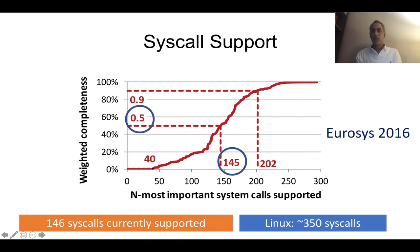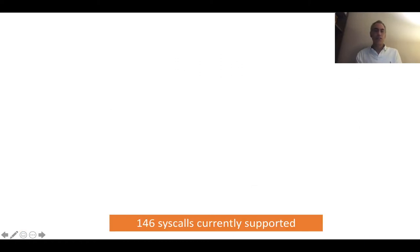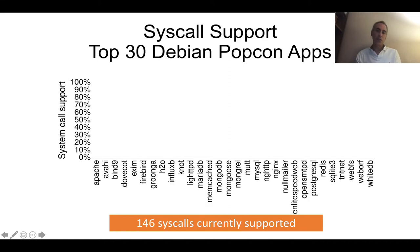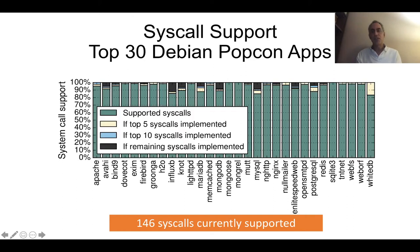To get a little bit more precise, we did our own study in Unicraft and we took the top 30 Debian popcon applications — the most popular ones. We have a plot where on the x-axis we have all the applications, and on the y-axis we show how much system call support we have in Unicraft for each of the applications. The takeaway message is that it's mostly green — we mostly support all of them, and with a bit more work we would support the remaining ones.